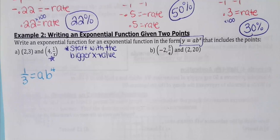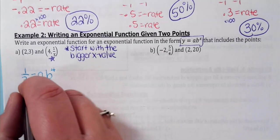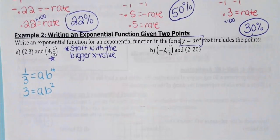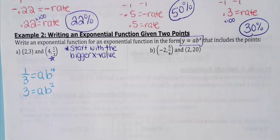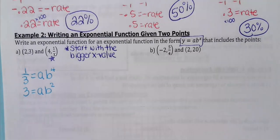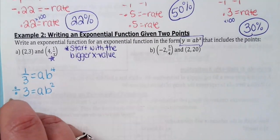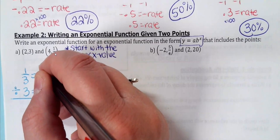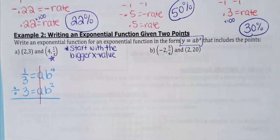When x is four, the y coordinate is 1/3, so: one-third equals a times b to the fourth. Then for the other point (2, 3): three equals a times b squared. I now have two equations and two unknowns. For exponential systems, you divide the top line by the bottom line — that way a divided by a cancels out every time.